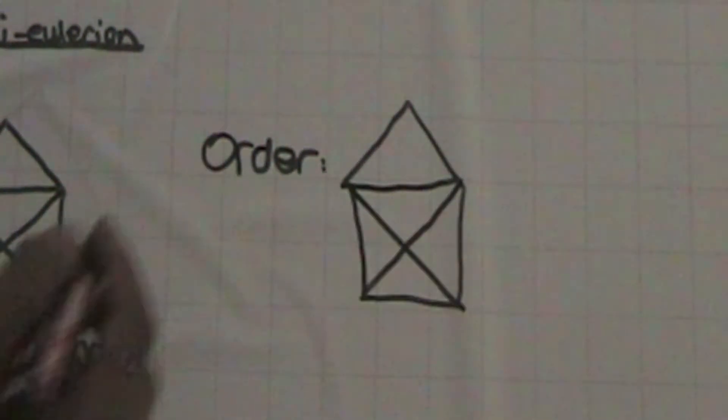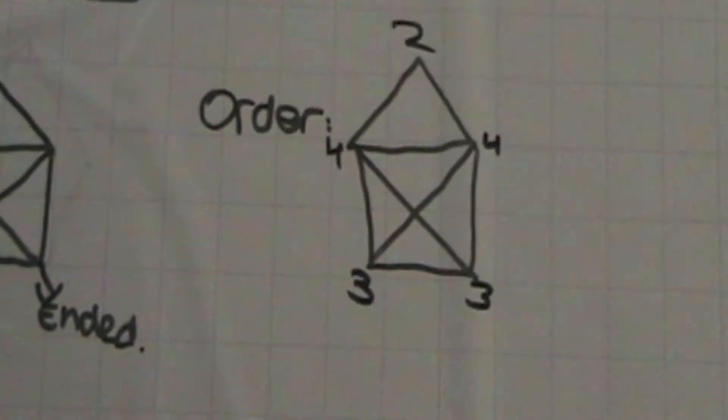In a semi-Eulerian graph, we start and end at different vertices. Looking at the orders again, they are three, three, four, four, two.